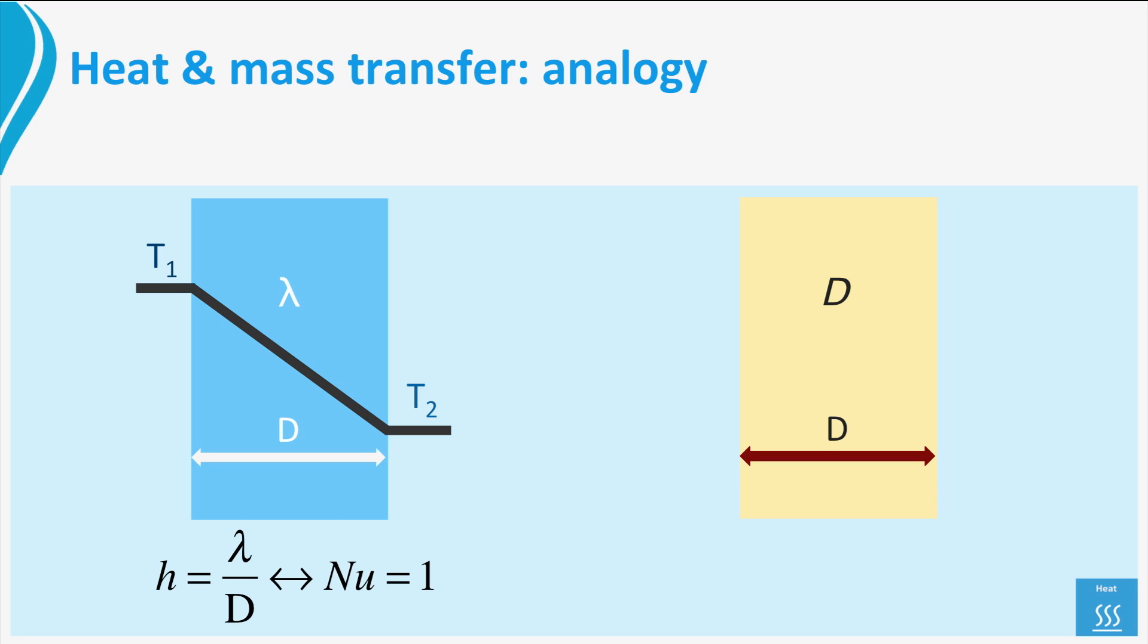We found there that the temperature profile was a straight line, resulting in H equals lambda over d, the thickness of the plate. We could summarize this by stating Nusselt is 1. The analogy tells us that also in the diffusion case, the concentration profile must be a straight line. Pushing the analysis further, we would find that the mass transfer coefficient k is then equal to the diffusion coefficient italic d over the object thickness straight d. Also, this result can be summarized: Sherwood is 1.